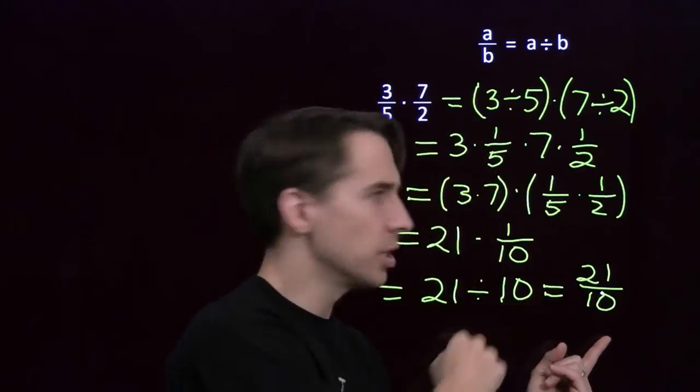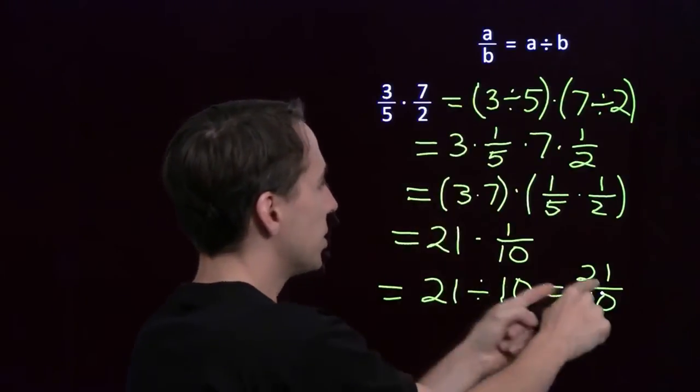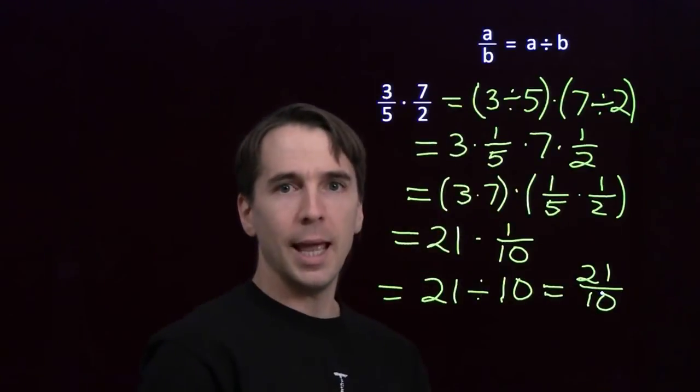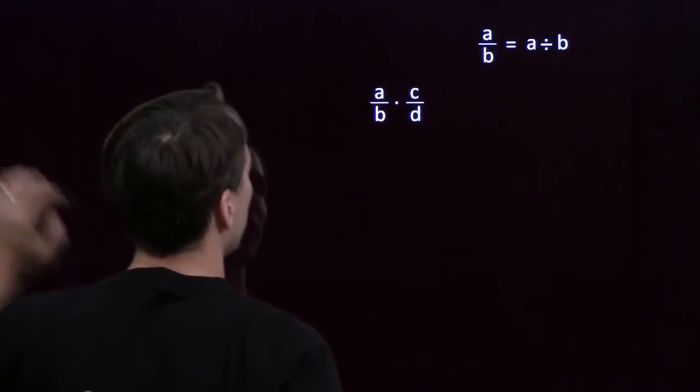This number, a fraction is a number. 3 over 5 times 7 over 2. 3 times 7 is 21. 5 times 2 is 10. Hmm. Let's see if that always works.